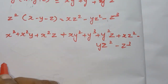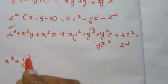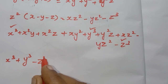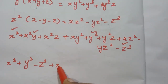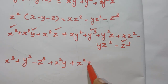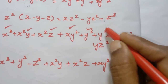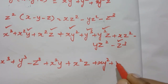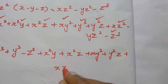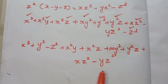Collecting all terms: x variable gives x³. Individual variables: plus y³, minus z³. Then cross terms: plus x²y, plus x²z, plus xy², minus yz², plus y²z, plus xz², minus yz². This is the complete expanded answer.